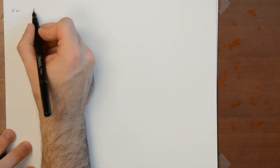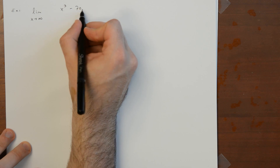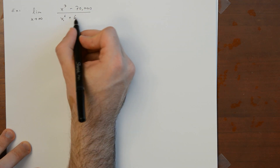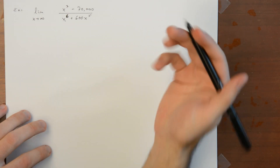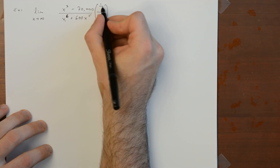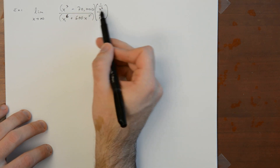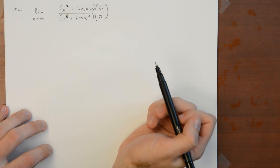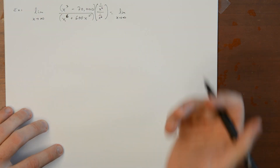Let's do a couple of examples. Take the limit as x goes to infinity of x to the 7th minus 70,000, divided by x to the 6th plus 600x to the 5th. The highest power of x in the denominator is x to the 6th, so we multiply the numerator and denominator by 1 over x to the 6th. Since x is getting larger and larger, x is not 0, so this is fine.